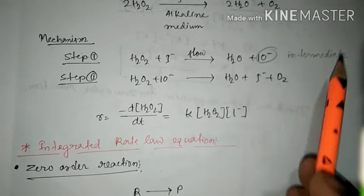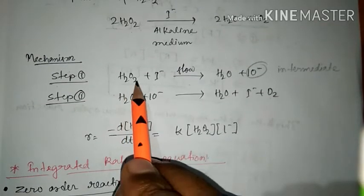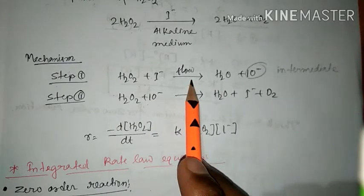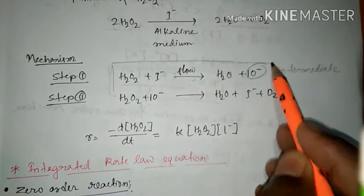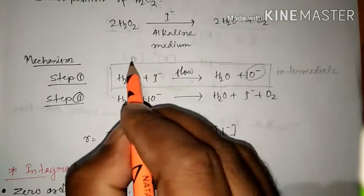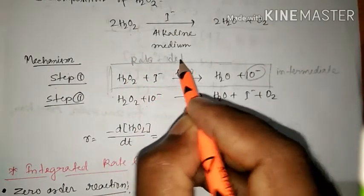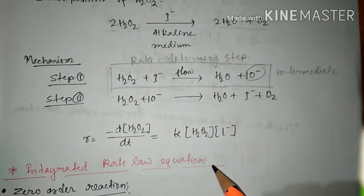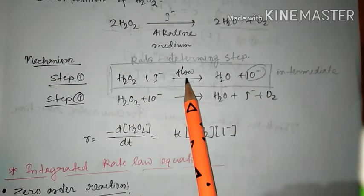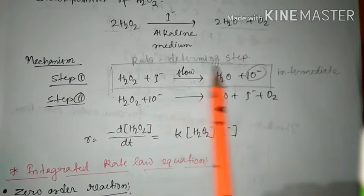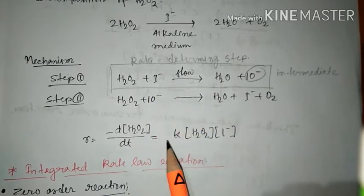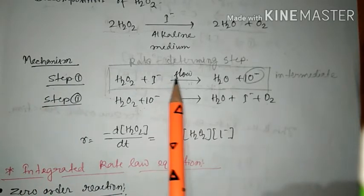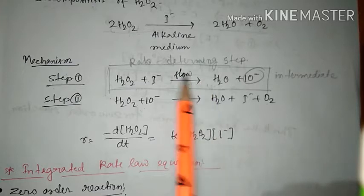Now, there are two remarkable properties here. The first property is that step one is the slowest step in this mechanism, and the slowest step is known as the rate determining step. Experimentally, the rate is determined from this slowest step, not the other step. Even though the reaction proceeds in two ways, the rate of the reaction is only dependent on the slowest step.